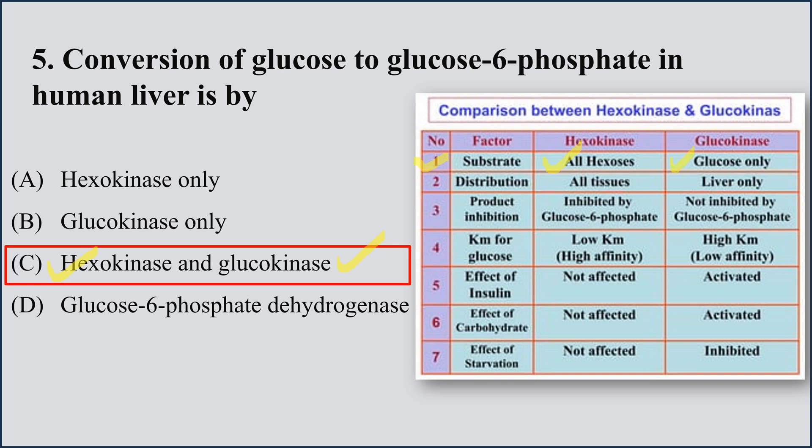Regarding product inhibition: hexokinase is inhibited by glucose-6-phosphate, while glucokinase is not affected by glucose-6-phosphate levels. Regarding KM value: hexokinase has a low KM value, meaning high affinity — even at very low glucose concentrations, hexokinase can act on glucose. Glucokinase has a high KM value, meaning low affinity — it requires high glucose concentration to act.